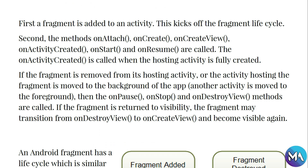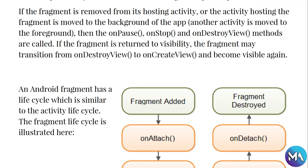First, a fragment is added to an activity — this kicks off the fragment lifecycle. The methods onAttach, onCreate, onCreateView, onActivityCreated, onStart, and onResume are called. onActivityCreated is called when the hosting activity is fully created. We will clarify these methods in the next video about making a real fragment app which contains and summarizes all of these concepts.